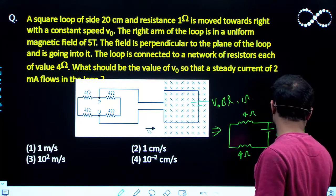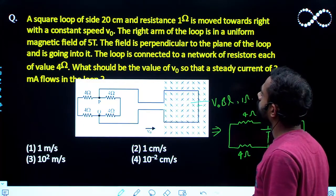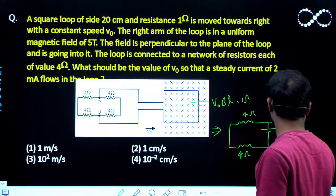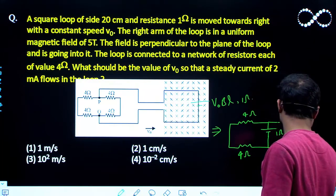This resistance is 1 ohm here. The square loop having the resistance 1 ohm and this is V0 B into L.